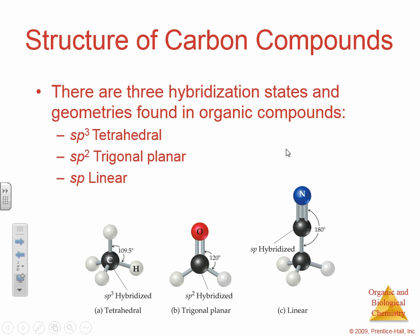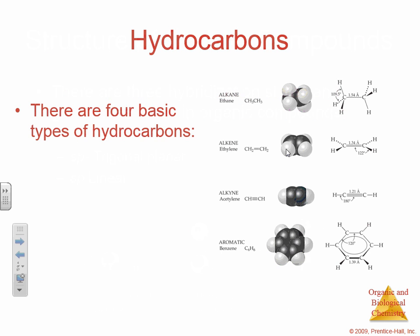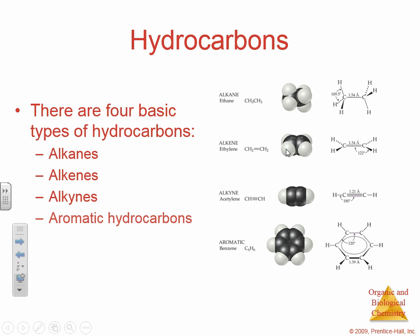We find three geometries in organic compounds: tetrahedral, trigonal planar, and linear. And we have four basic types: alkanes, alkenes, alkynes, and aromatic compounds. We're going to review alkanes, alkenes, and alkynes in section 25.1, and we'll save aromatic compounds for 25.2.